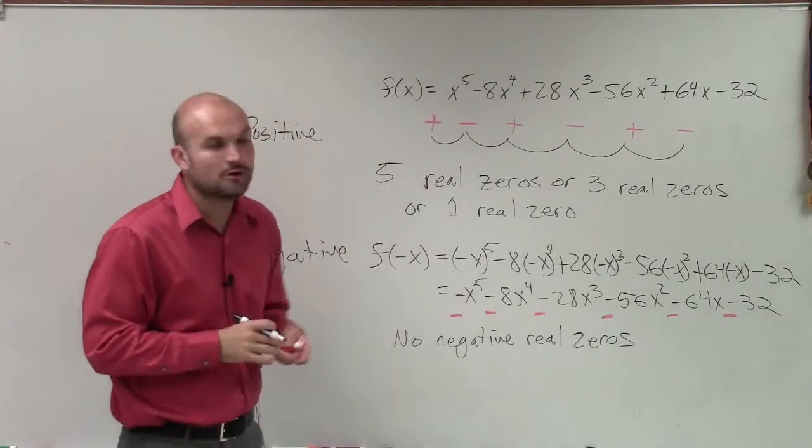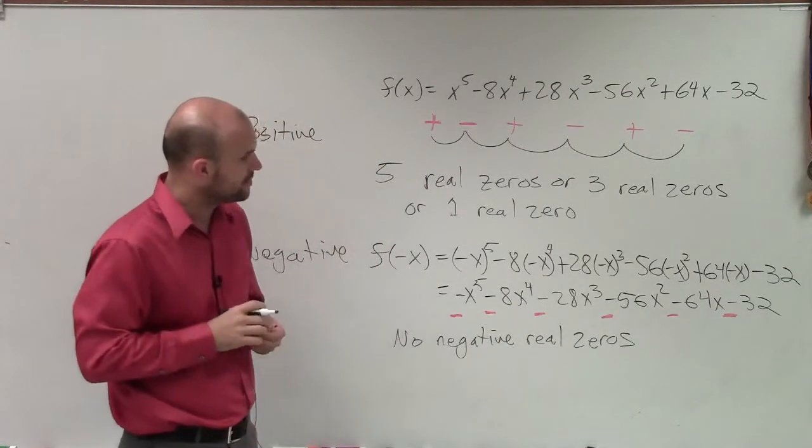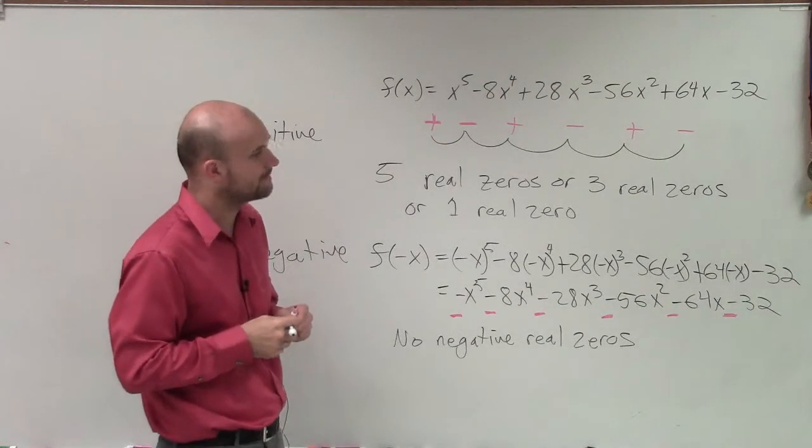And there you go. That's how you apply Descartes' rule of signs to define all your possible positive and negative real zeros. Thanks.